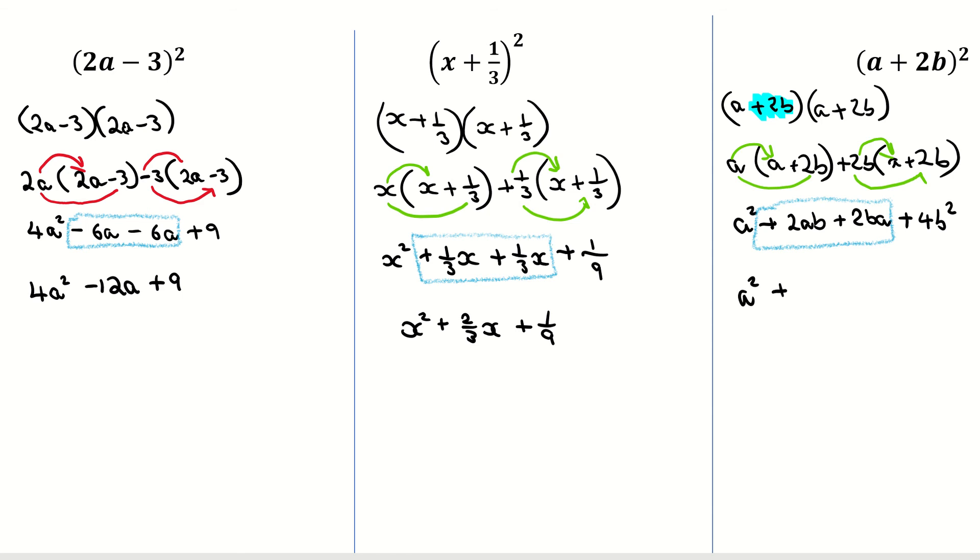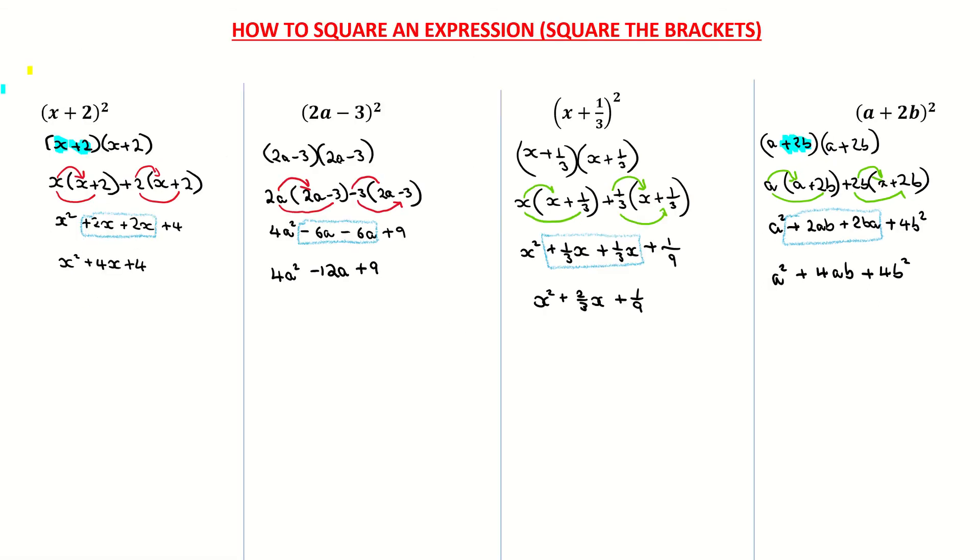So it's a squared plus, well, how many abs do I have now? I have four of them. So I have 4ab, or that can be written as 4ba. I'm just writing it alphabetically there. Plus 4b squared. And that is our final answer. So I hope that helps.